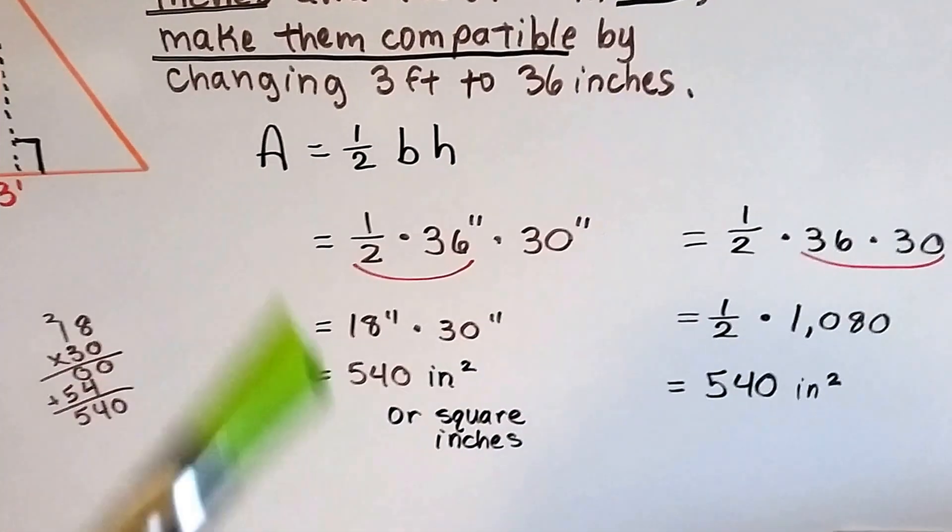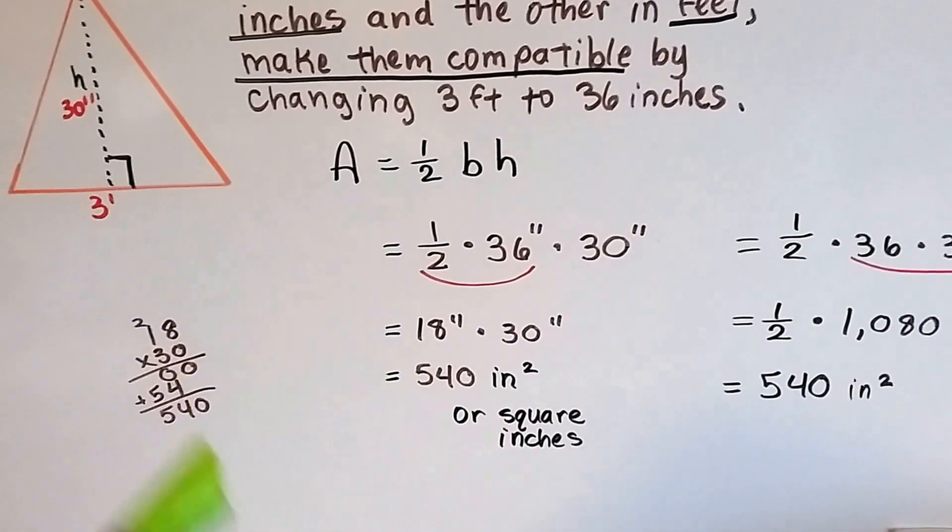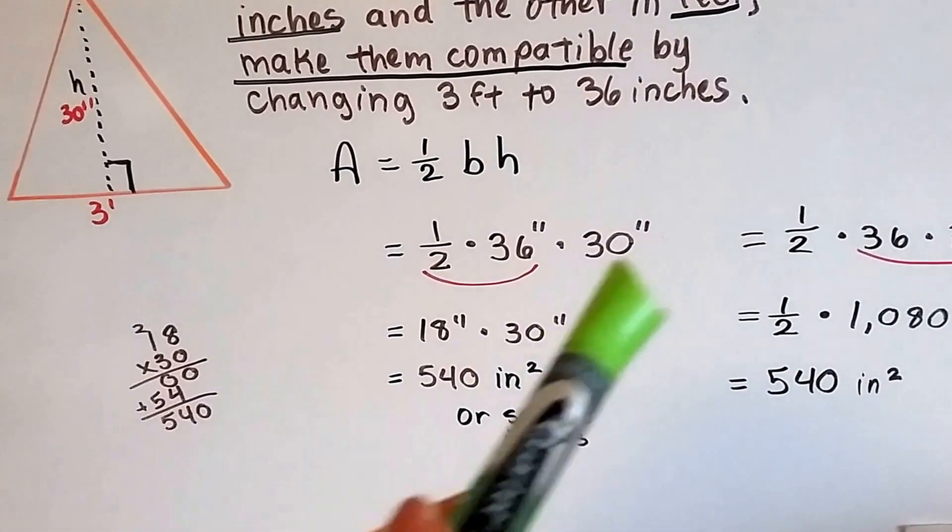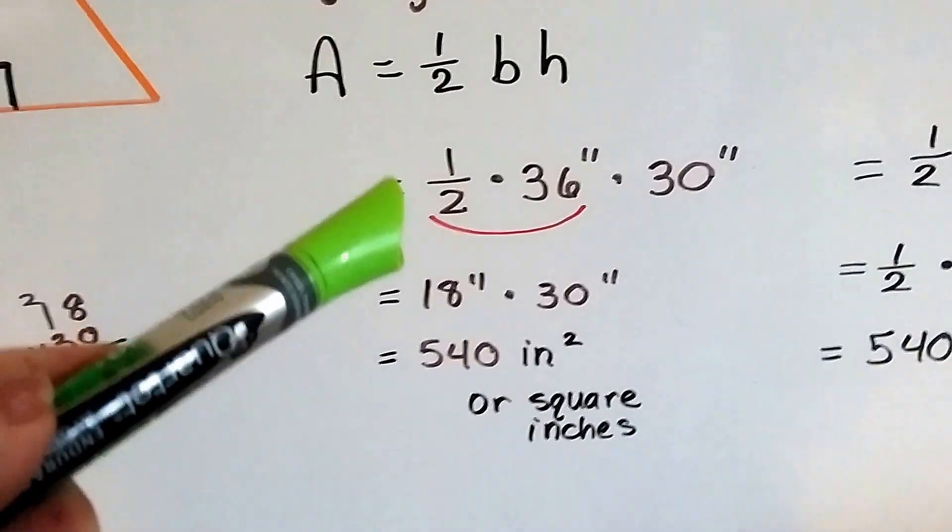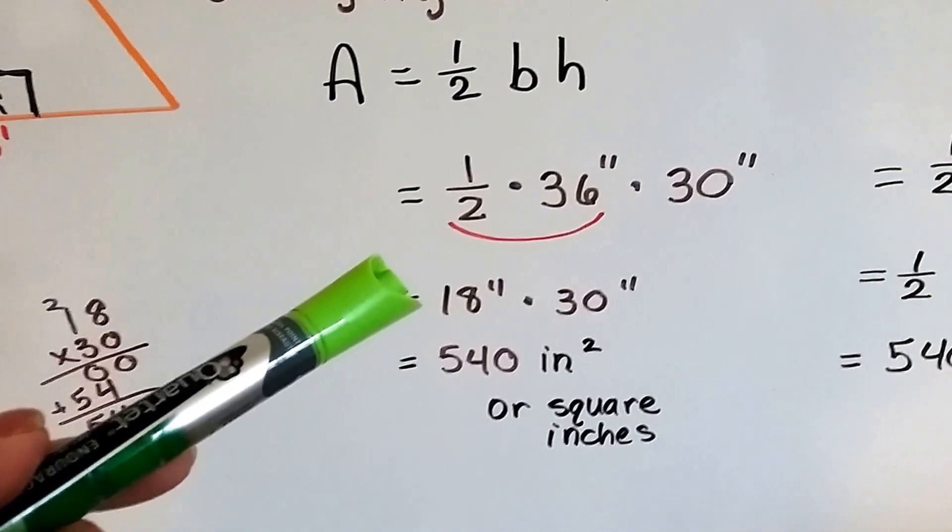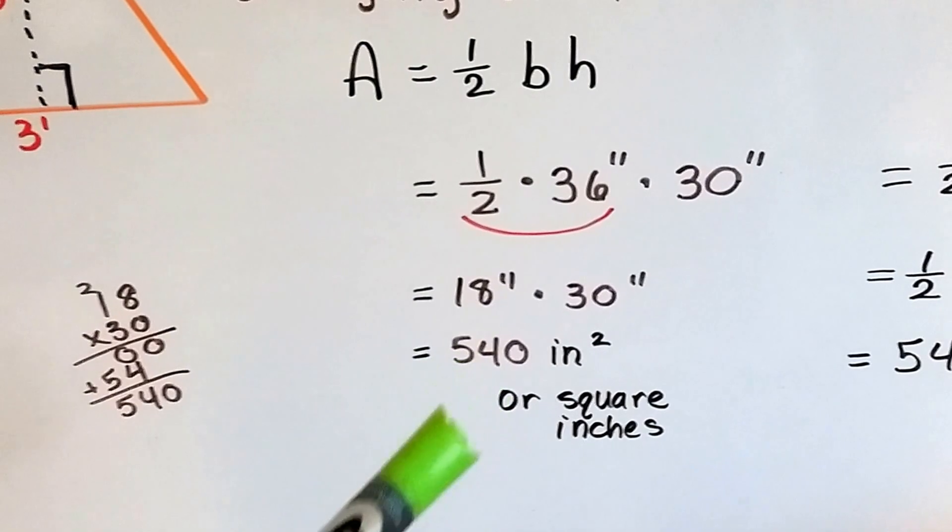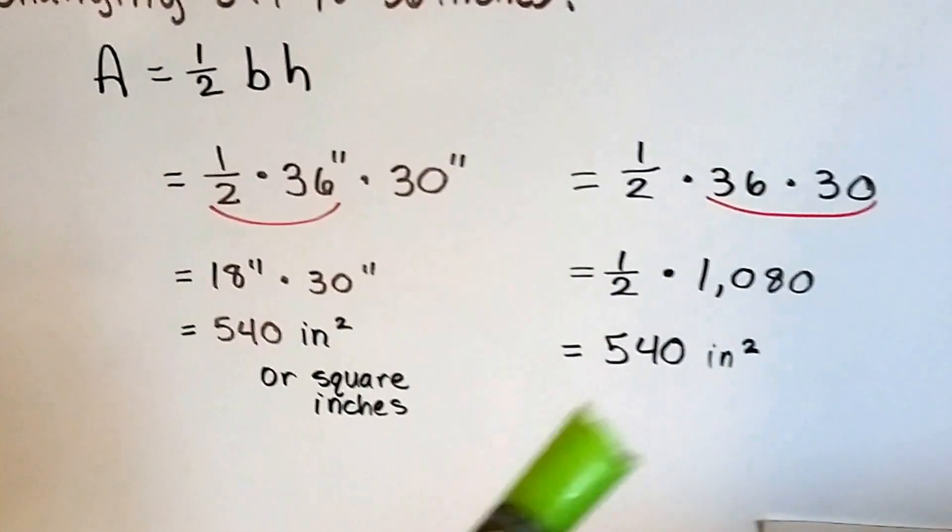So our formula, area equals half base height. We put in the half and 36 inches as our 3 feet and 30 inches as our height. And we can multiply a half times 36 and get 18, that's half of 36. Then we multiply it by 30, a little math on the side, and we get 540 inches squared or square inches. Now we could have also done this.